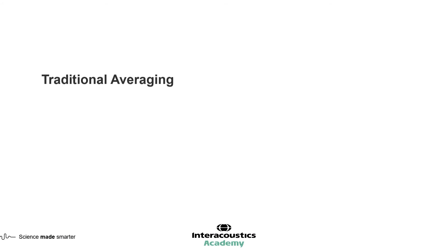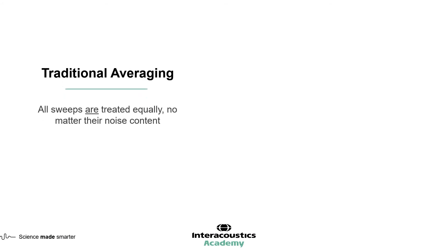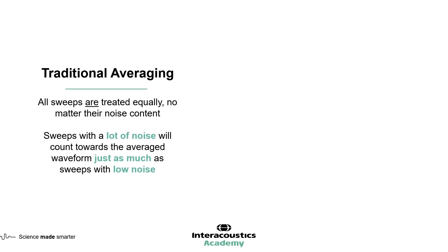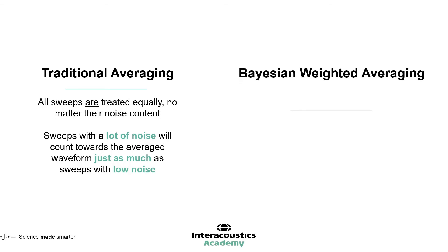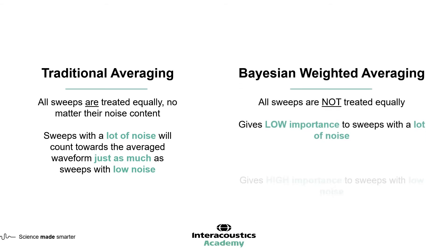In traditional averaging, all sweeps are treated equally, and those noisier ones contribute just as much as the quieter ones. In Bayesian weighted averaging, low importance is given to sweeps with a lot of noise, and high importance is given to sweeps with less noise.